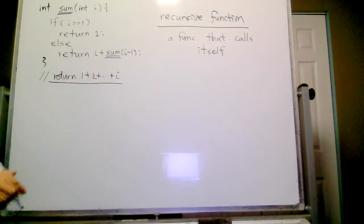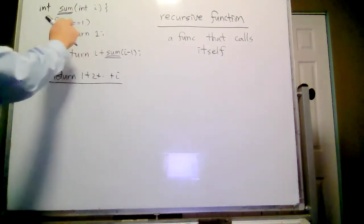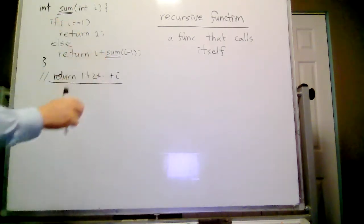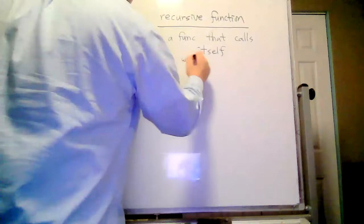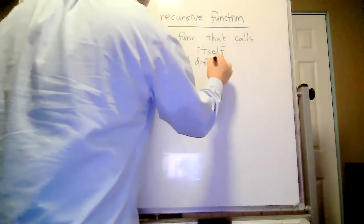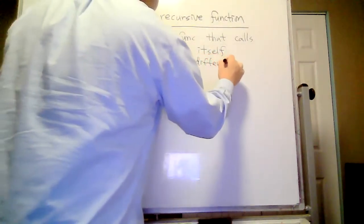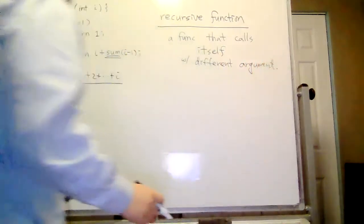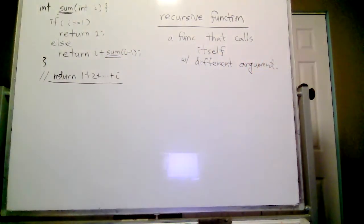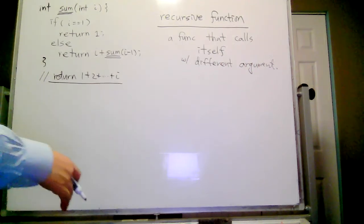So what's the difference? Well, it calls itself with a different argument. If it calls itself with the same argument, then it will basically be infinite recursion. So we don't do that. That's the recursive function.